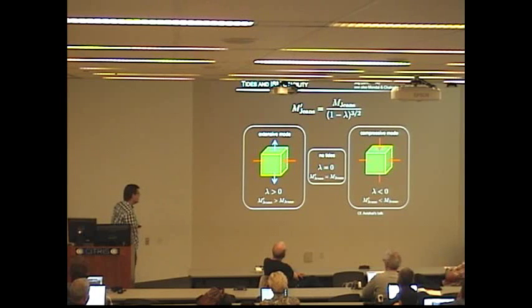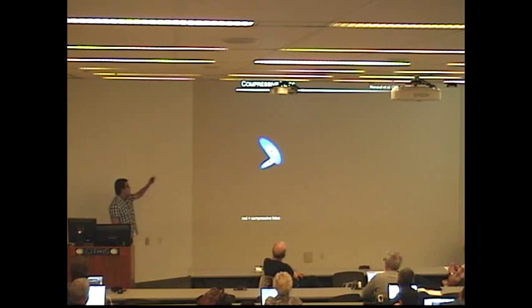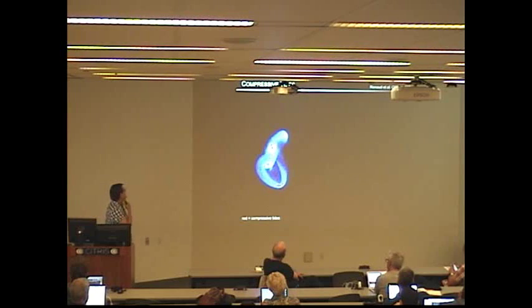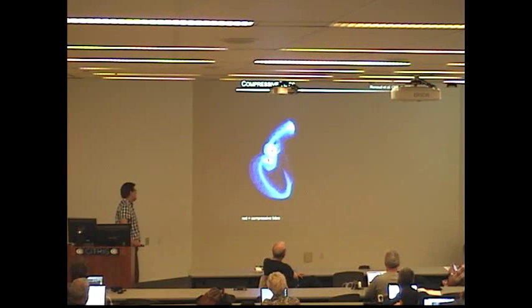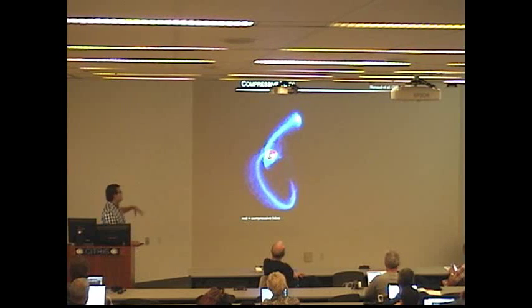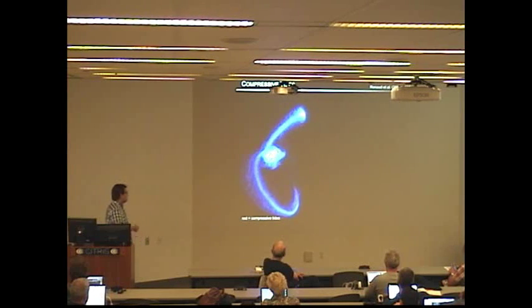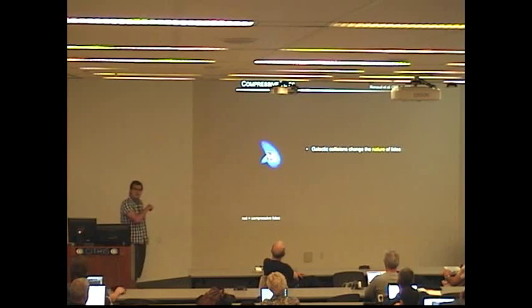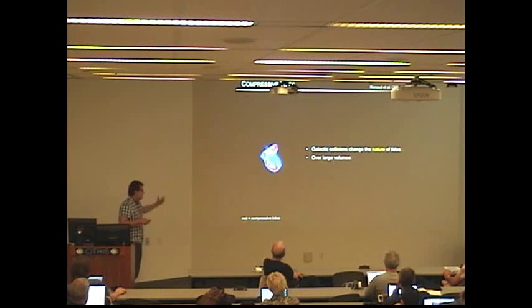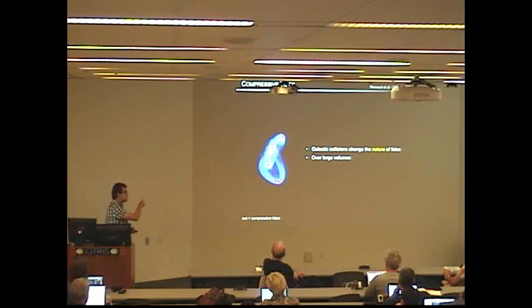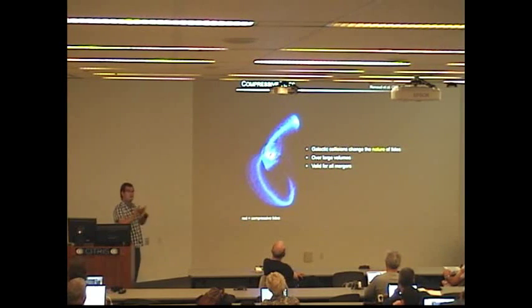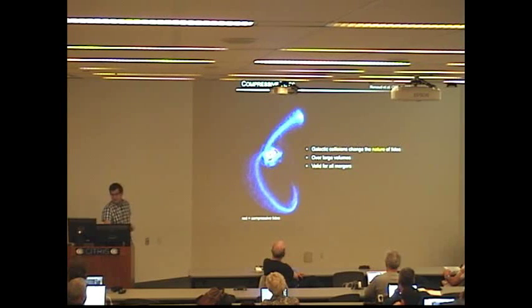Here you see a very simple model of two interacting disk galaxies. And in red, you see the regions in compressive tides. So you see that at the time of the collisions, like right now, you see that these red compressive regions become very important. You change the nature of tides because of the galactic interaction, because of the galactic collisions. And you don't do that over tiny regions. It's kiloparsec scales. It's over large volumes. This is not only true for this particular case. This is valid for more or less all mergers. You can play with the mass ratio, with the orbits, spin-orbit coupling, etc. You will always reach this conclusion.